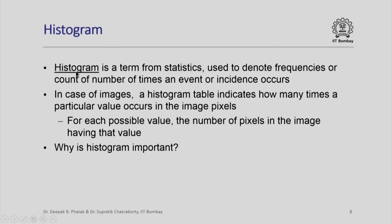First, we introduce the term histogram. It is a statistical term which is used to denote the frequencies or count of the number of times an event or incidence occurs. In case of digital images, a histogram table simply indicates how many times a particular value occurs in the image pixels. So for each possible value, the number of pixels in the image having that value is the entry into the histogram table.